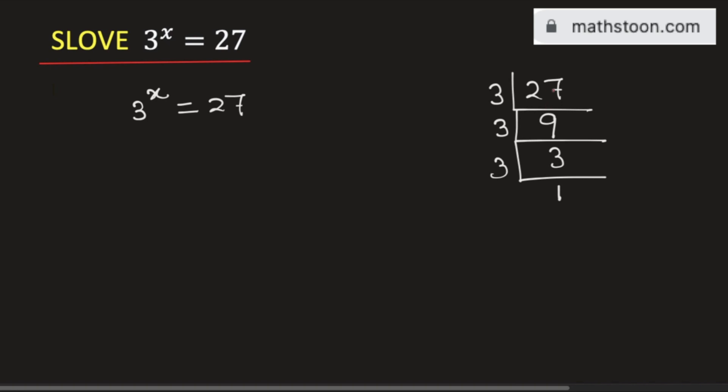So we can say that 27 is the product of these numbers. That is, we can write 27 as 3 times 3 times 3. As it's a product of three 3's, this can be written as 3 to the power 3.